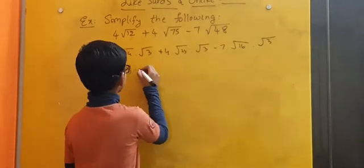Now let's compute the like terms. So we get here 4 × 2 is 8, 8√3, plus 4 × 5 is 20, 20√3, minus 7 × 4 is 28, -28√3.